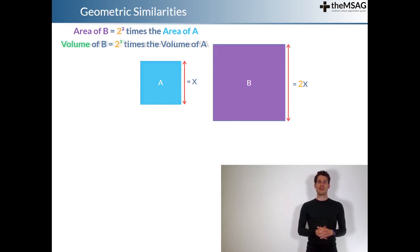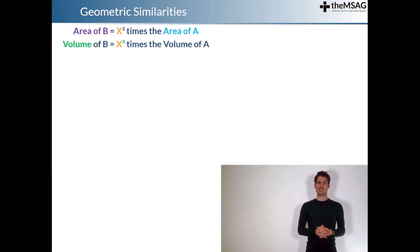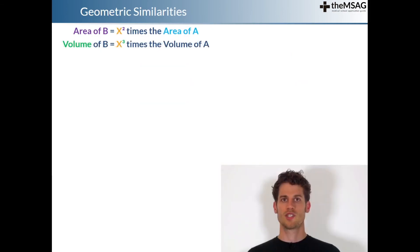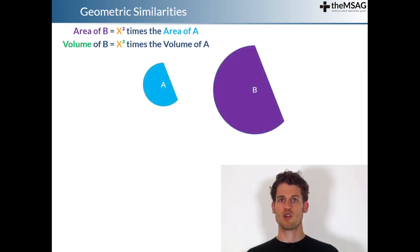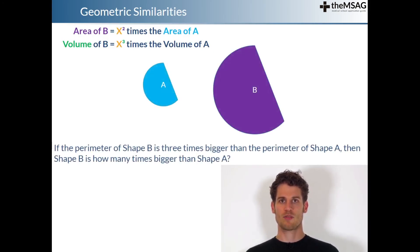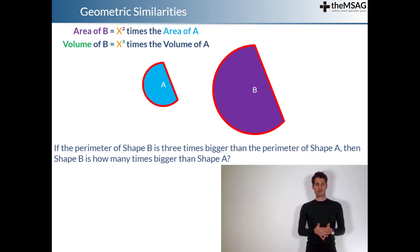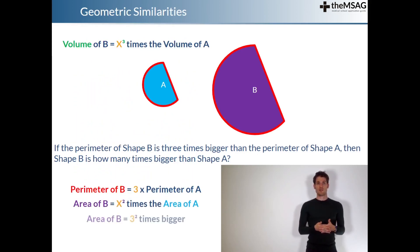Here's a quick example, but don't worry UCAT will give you some fairly simple numbers to work with if they test this geometric similarity. The two similar shapes above represent the blueprints for a concert hall. If the perimeter of shape B is 3 times bigger than the perimeter of shape A, then shape B is how many times bigger than shape A. If the perimeter, which is a 1 dimensional length of shape B, is 3 times bigger than the perimeter of shape A, then the area, which is 2 dimensional, of shape B will be 3 squared, or 9 times bigger.